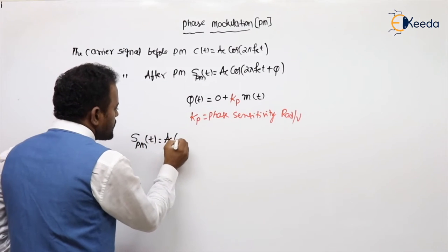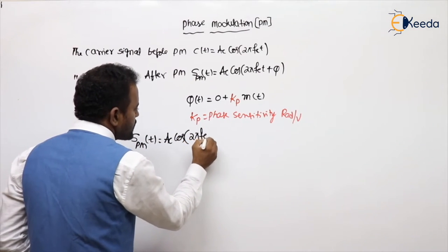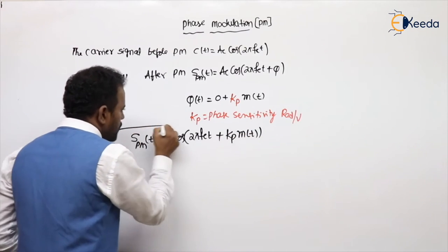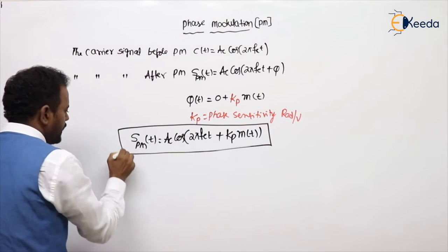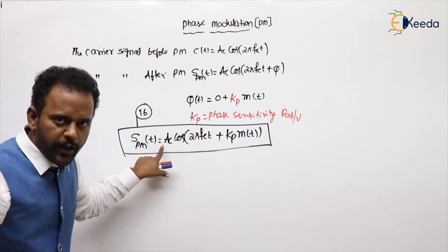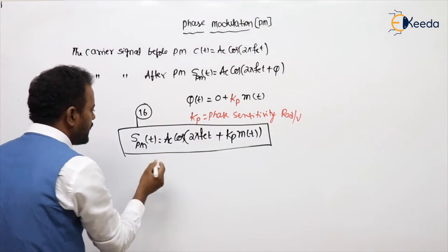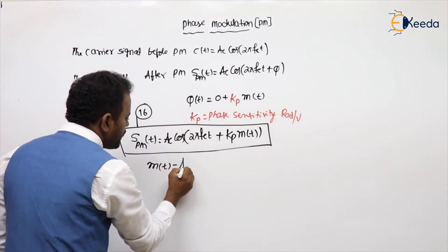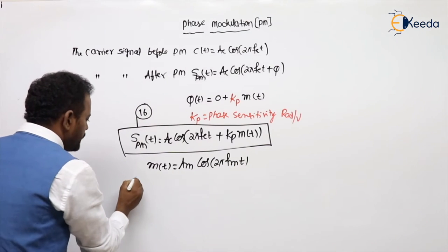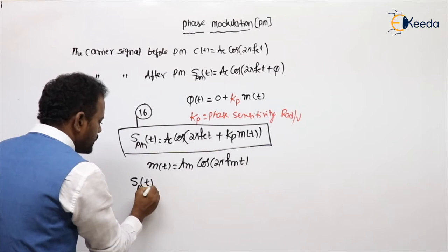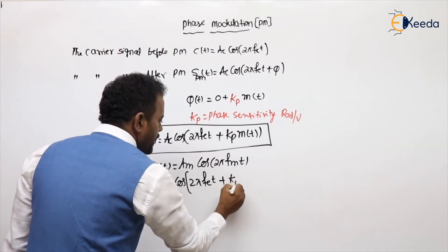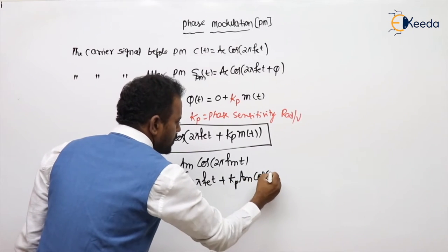The general expression for phase modulation is: A_c cos(2πf_c·t + kp·m(t)). This is the 16th expression — the general expression for PM. After getting the general expression, substitute the single tone. Single tone means: m(t) = A_m cos(2πf_m·t). Substitute that, and the single tone expression for PM you will get: A_c cos(2πf_c·t + kp·A_m cos(2πf_m·t)).